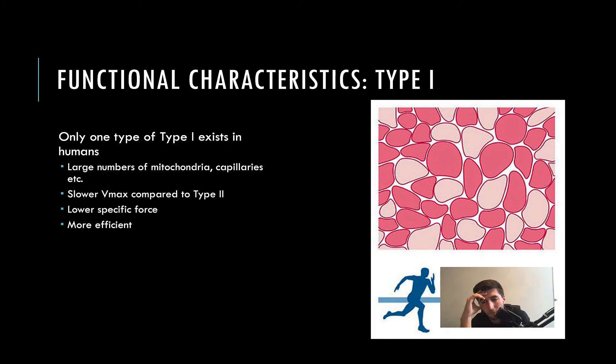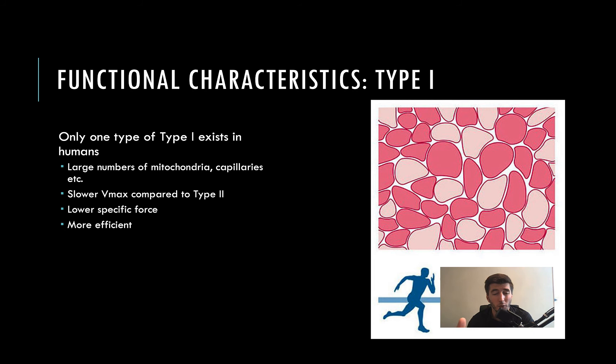Type 1 fibers are going to be highly capillary dense, have large numbers of mitochondria, and have a higher rate of mitochondrial biogenesis — actually generating more mitochondria faster. Their velocity of shortening is significantly slower and they have a lower specific force, but they're efficient — they can continue to work well with low amounts of force. Because of the capillary density, Type 1 fibers are red and Type 2s are the white fibers.